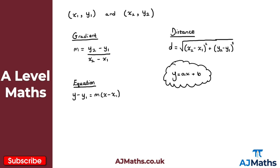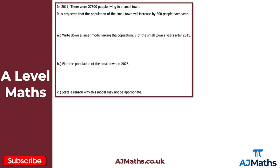For question one, we're told that in 2011 there were 27,500 people living in a small town, and it's projected that the population will increase by 500 people each year. For part a, we're asked to write down a linear model linking the population p of the small town t years after 2011. We need two things: the gradient — how much the population increases each year — and the initial population.